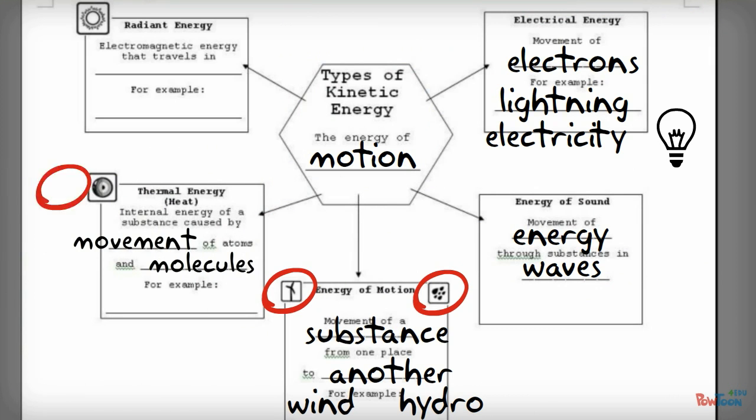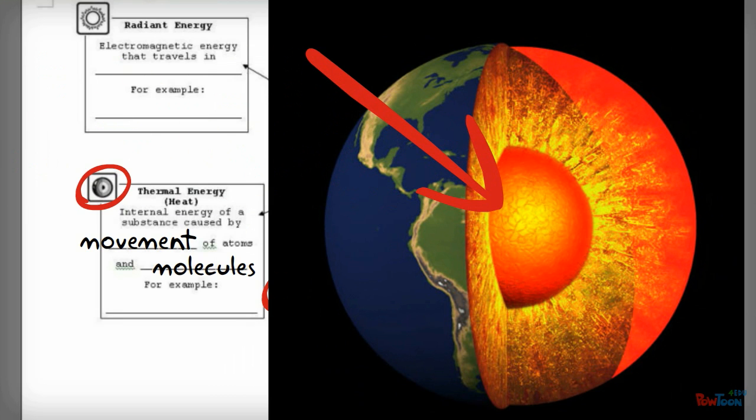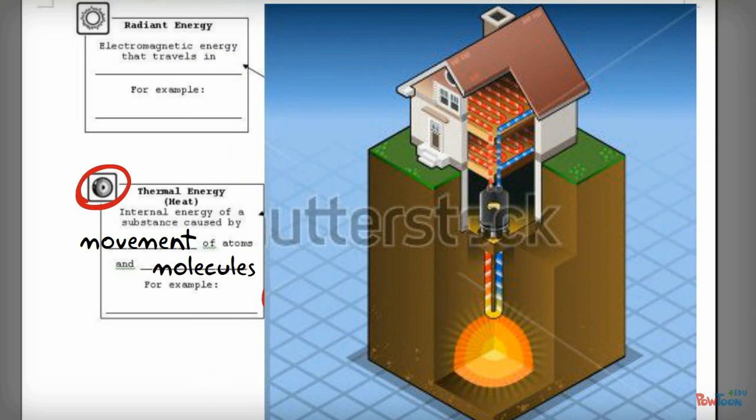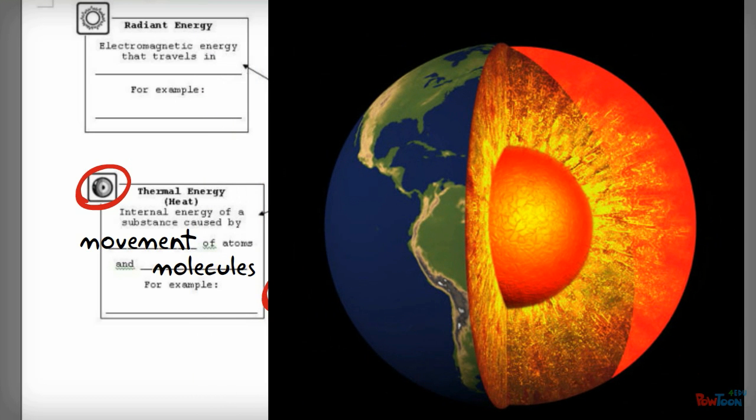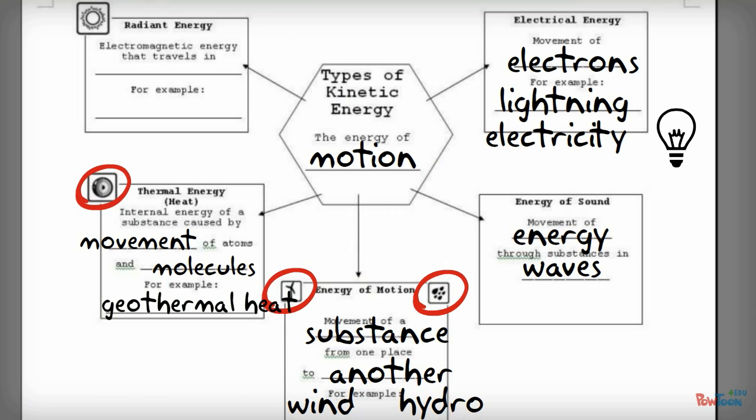And this little icon here is a picture of the core of the Earth because the Earth actually has a huge amount of stored heat energy at its core. And we can actually tap this and use it to heat water, for example, which can then be used to heat buildings and homes. And so when we are converting the Earth's internal energy into energy that we can use, we call it geothermal heat. Geo for Earth and then thermal for heat.